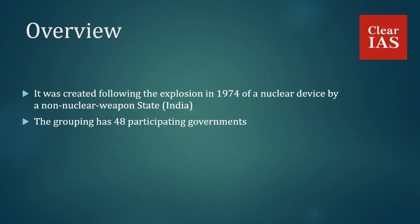NSG is a group of nuclear supplier countries that seeks to contribute to the non-proliferation of nuclear weapons through the implementation of two sets of guidelines for nuclear exports and non-nuclear related exports. This grouping has 48 participating governments, and NSG guidelines are implemented by each member in accordance with its national laws and practices. NSG decisions are taken by consensus.